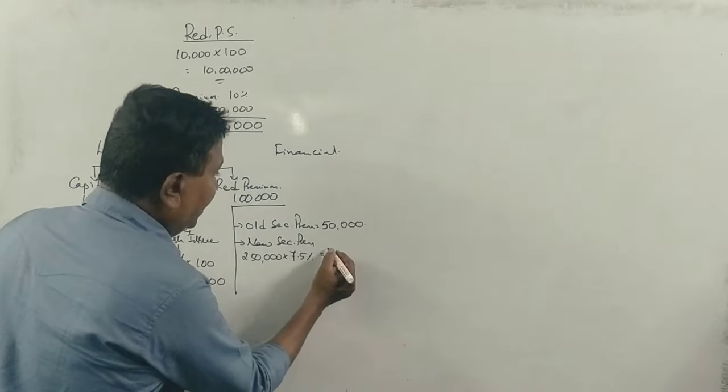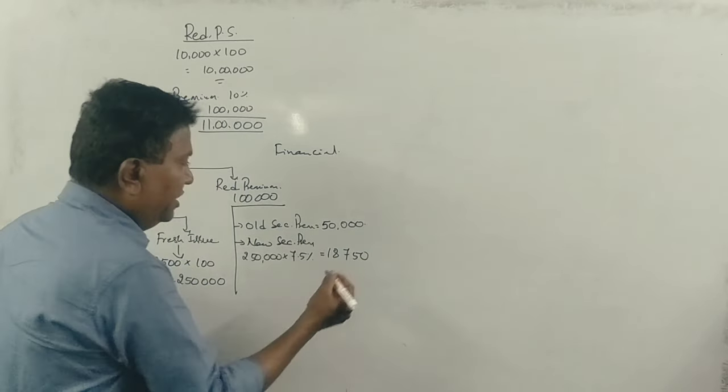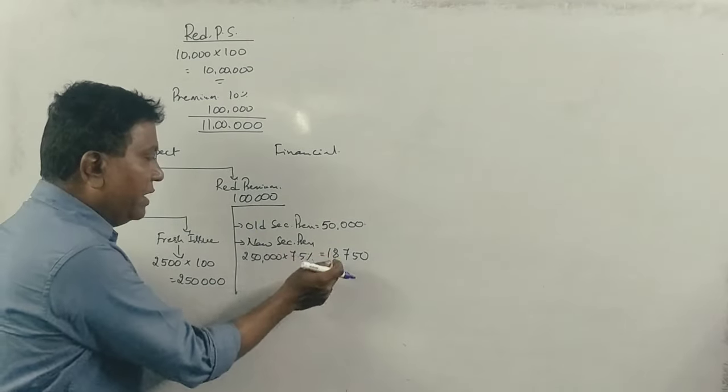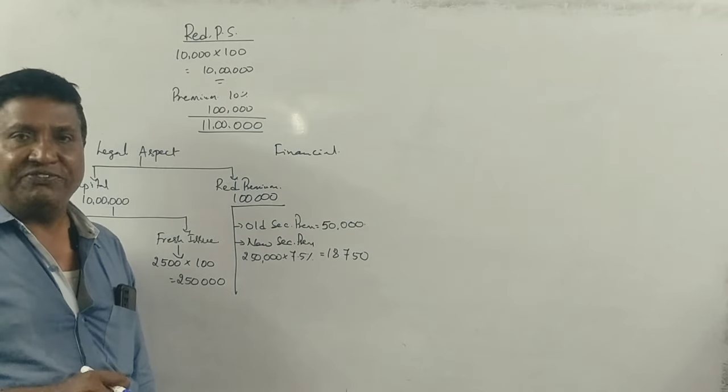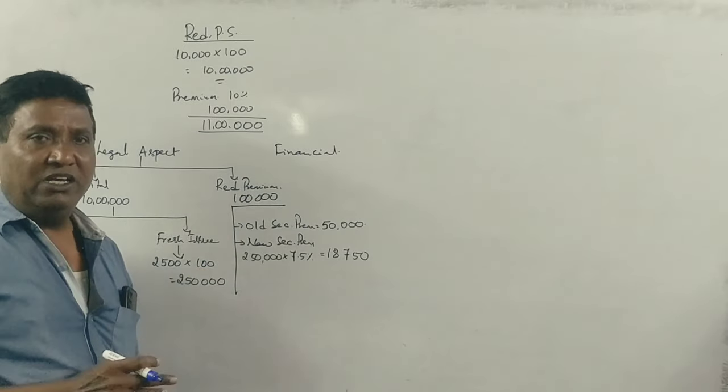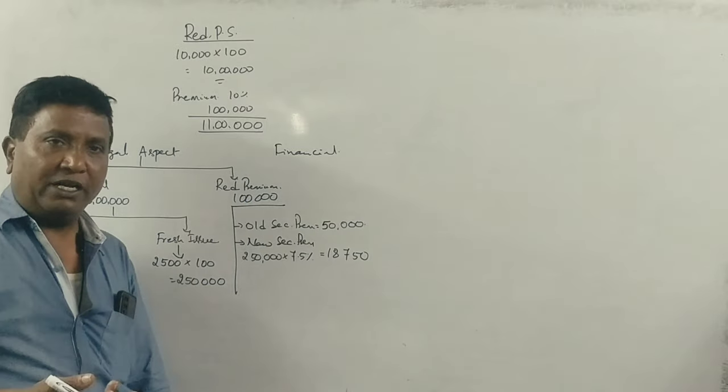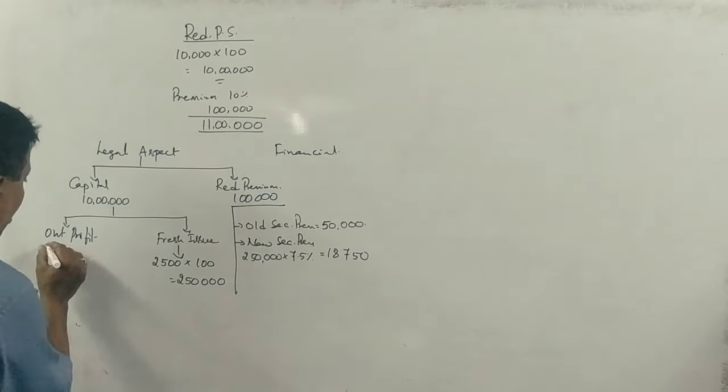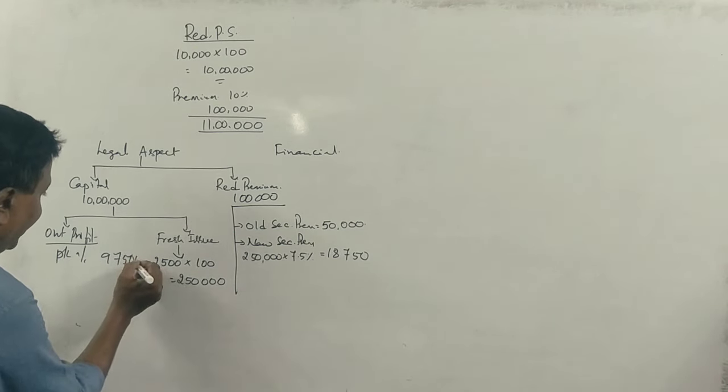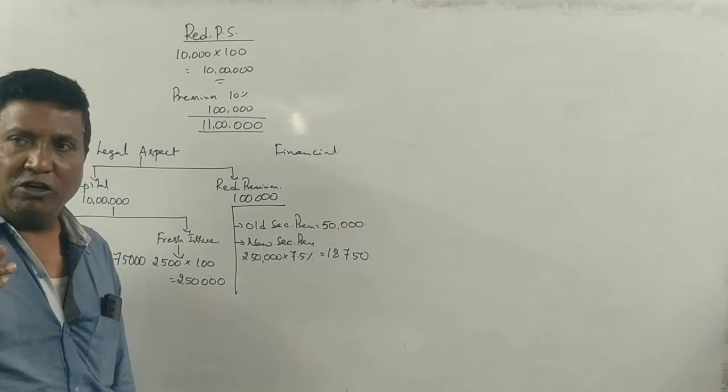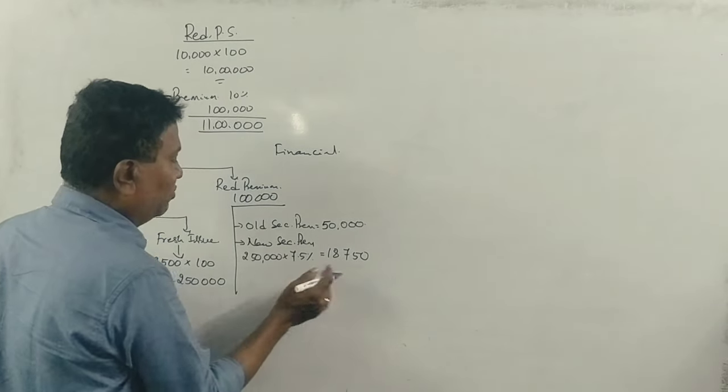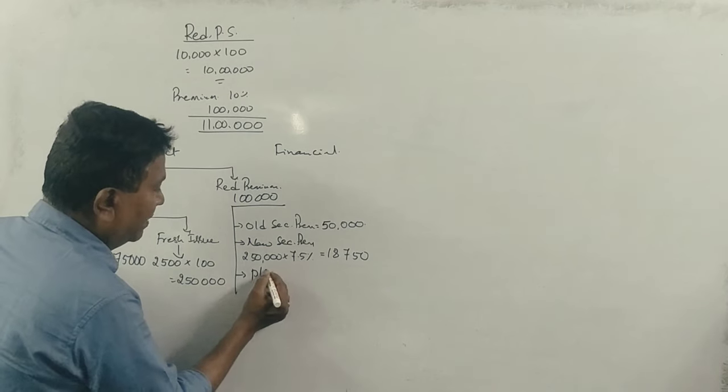We have 1 lakh rupees needed. The new premium collected is 18,750. The old security premium is 50,000. New security premium plus old security premium equals 68,750 rupees. Now that we have 68,750, we need 1 lakh for redemption premium. The balance required is 31,250 rupees.